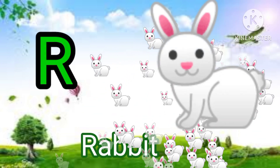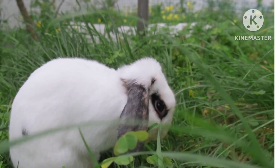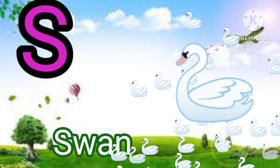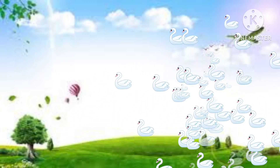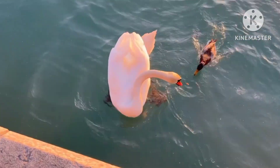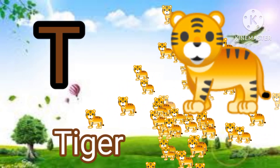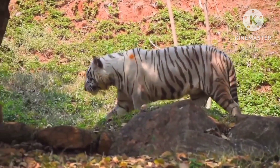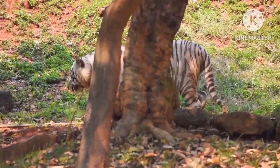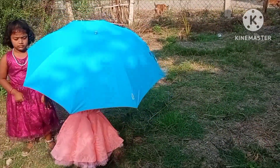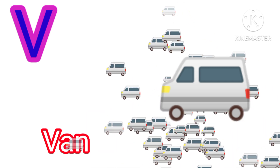R for rabbit. S for swan. T for tiger. U for umbrella. V for van.